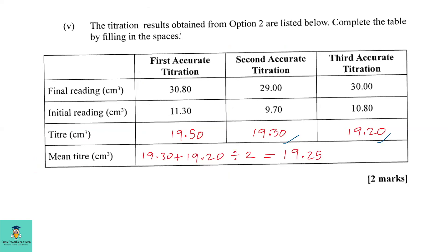Part five: the titration results obtained from option two are listed below. Complete the table by filling in the spaces. Calculating the titer volumes: 30.80 minus 11.30 gives 19.50; 29.00 minus 9.70 gives 19.30; and 30.00 minus 10.80 gives 19.20. The last two readings are within plus or minus 0.1 of each other, so they are used to calculate the average titer volume: 19.30 plus 19.20 divided by 2 equals 19.25 cm³.